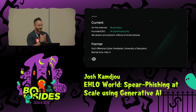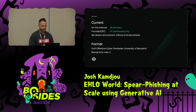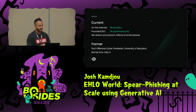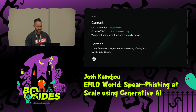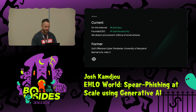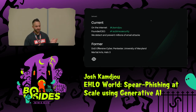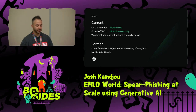I'm on the internet — you can find me pretty much everywhere at Jay Kamju. I'm the founder and CEO of a company called Sublime Security. We detect and prevent lots of email attacks. That's why we're here today, to share a little bit about what we've been seeing in the wild, and also some of what we recreated on the offensive side. My background prior to Sublime was spent mostly in the offensive cyberspace, and that's a little bit of what we're going to be bringing today.